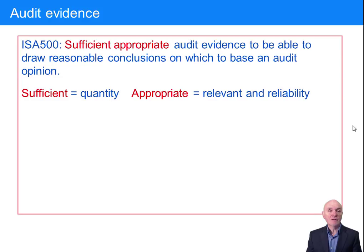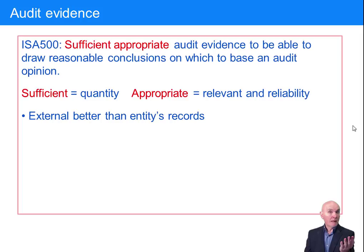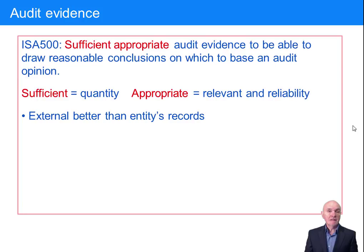So what is the pecking order for how good evidence is? First, external evidence is better than the entity's own records. This is why it's great to have the cash book held by the entity, but also bank statements coming in. At year-end you get a bank certificate sent directly from the bank to the auditors stating how much the client had in the bank. Getting this third-party evidence is much stronger than relying on internal evidence alone.